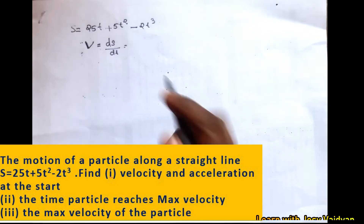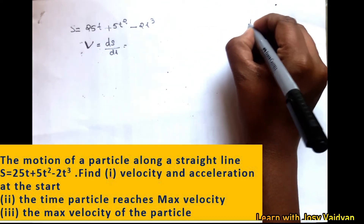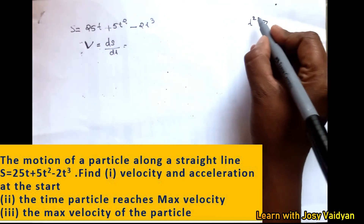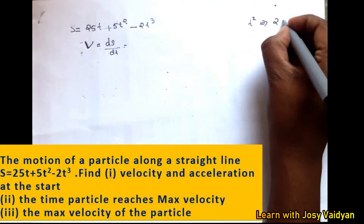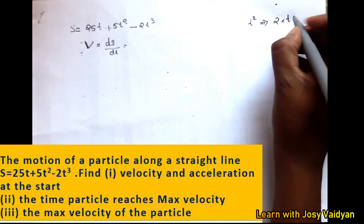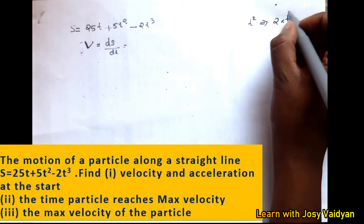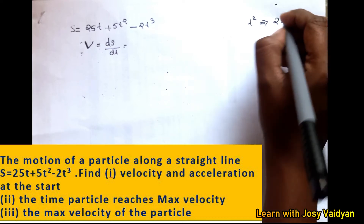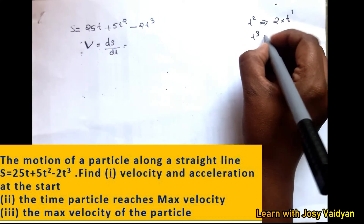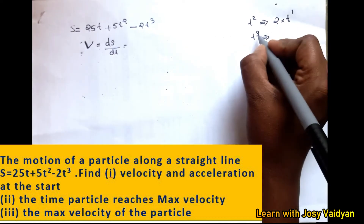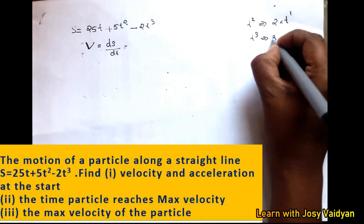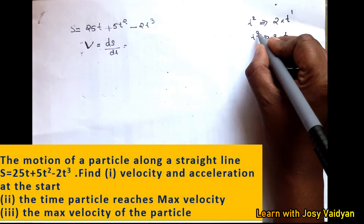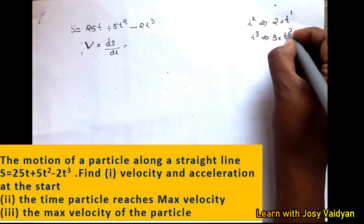To differentiate, for example, t squared: applying the power rule, we bring down the exponent so d/dt of t squared equals 2t. Similarly, for t cubed, the power is 3, so d/dt of t cubed equals 3t squared, and the power reduces to 3 minus 1 equals 2.